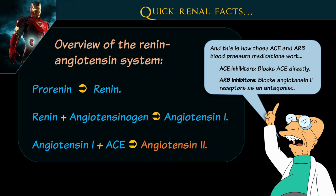So a quick review: pro-renin turns to renin; renin plus angiotensin makes angiotensin I; angiotensin I with ACE (angiotensin converting enzyme) makes angiotensin II, and that's how we get vasoconstriction. The drugs people are on at home for blood pressure — ACE inhibitors block that ACE from turning angiotensin I into angiotensin II, or ARBs block the angiotensin II receptor itself. That's how those drugs come into play. A renal patient on lisinopril, which is an ACE inhibitor, fits right into this pathway.